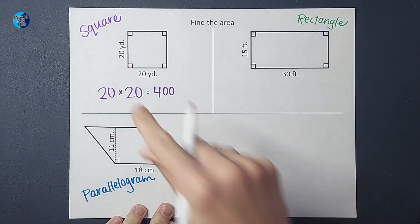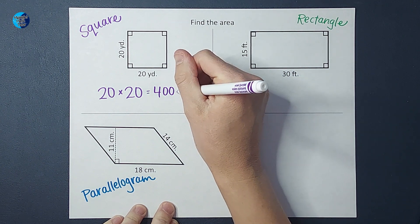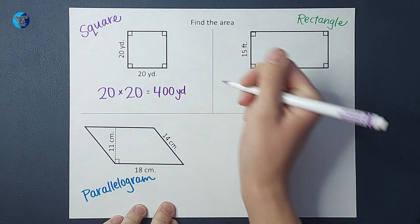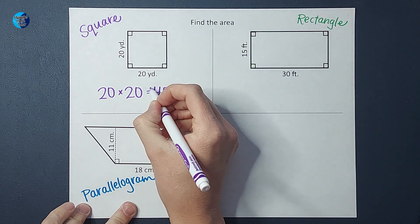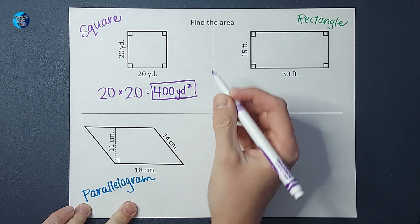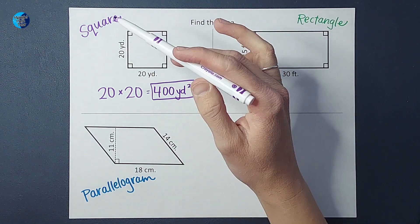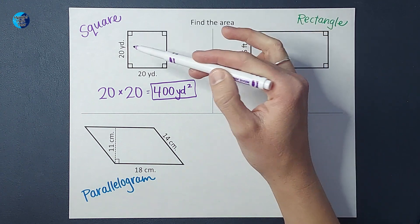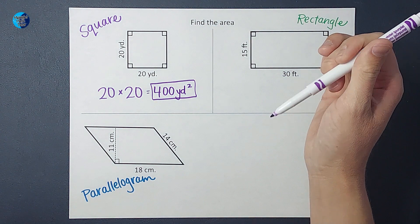Now whenever we're doing area, we need to pay special close attention to our units. We are in yards, but not just yards—because we're finding area, we are in yards squared. The reason for that is because when we're figuring out area, in this case we're in yards, so we're trying to figure out how many little squares that are one yard by one yard would fit inside of this square. That's why it is 400 yards squared.